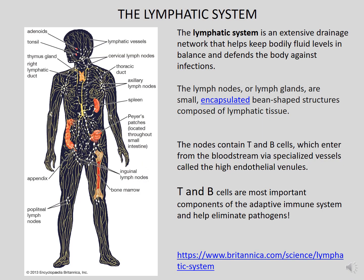The lymphatic system is an extensive drainage network that helps keep bodily fluids in balance and also defends against infections. Lymph nodes, also called lymph glands, are small encapsulated bean-shaped structures present throughout our body — we have thousands of them. Typically when you go to the doctor feeling sick, they check under your chin to see whether your lymph nodes are swollen, which is a sign of infection. Lymph nodes contain T and B cells that enter from the bloodstream into the lymphatic system. As mentioned, they are the most important components of the adaptive immune system and help eliminate pathogens.